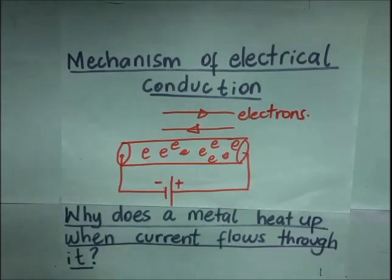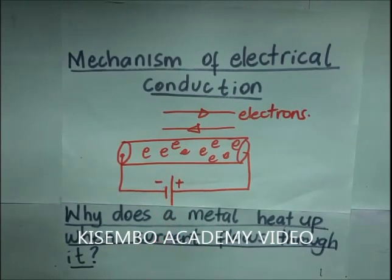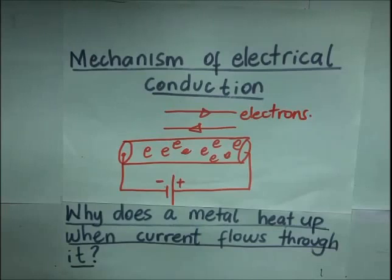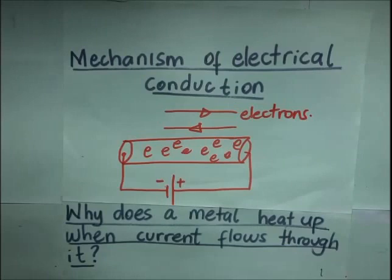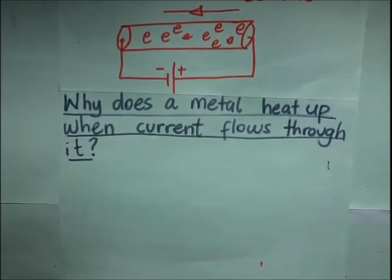In brief, every metal has free moving electrons which are not required for bonding. These are in a state of rapid and random motion and will not have a net flow in any direction. When a battery is connected across the ends of the metal, an electric field is set up, causing the electrons to gain kinetic energy and be accelerated in the opposite direction to that of the field. In their flow in this direction, they constitute what we call electric current — and that is the mechanism of electric conduction.